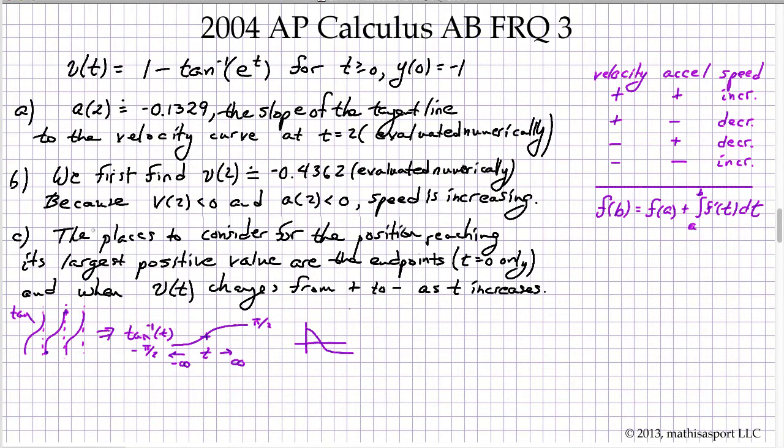Again, it's just 1 minus this curve. And so that looks like this. And so what we can see is that the endpoint at t equals 0, we have some position. But then we immediately add positive signed area to that position. So the endpoint can't be a maximum.